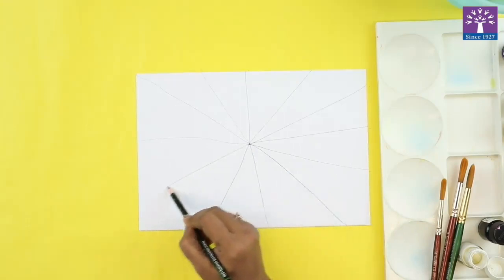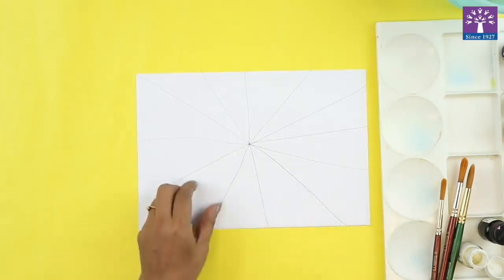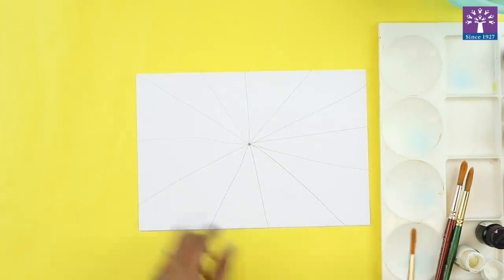So these lines can be thick and thin. The parts formed can be thick and thin. Now we are going to paint each part of this painting with different colors.